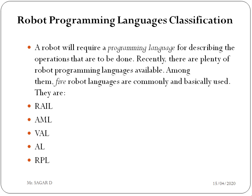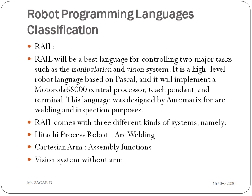The five robo programming languages are RAIL, AML, VAL, AL, and RPL. The first is RAIL — the best language for controlling two major tasks: the manipulator and vision system. It is a high-level robot language based on Pascal, implemented on the Motorola 68000 central processor with a teach pendant and terminal. This language was designed by Automatix for arc welding and inspection purposes. RAIL comes with three different systems: Hitachi process robot for arc welding, assembly functions, and a vision system.